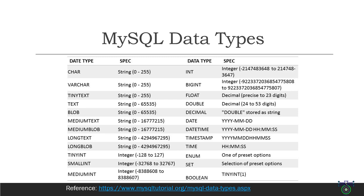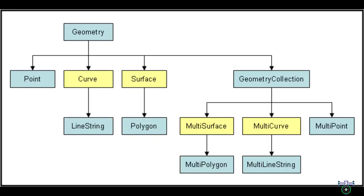Objects are instances of classes, and each object has its own unique set of properties and can perform certain actions or methods. In this context, we have a class called geometry which is an abstract class. This means it cannot be directly instantiated but rather serves as a base class for other classes. These classes are limited to representing 0, 1, or 2-dimensional geometric objects that exist in a 2-dimensional coordinate system.